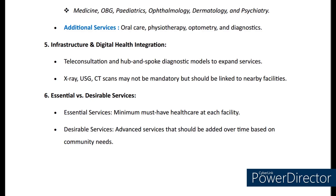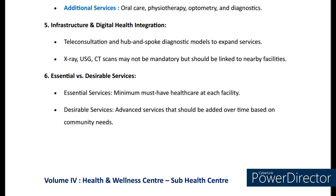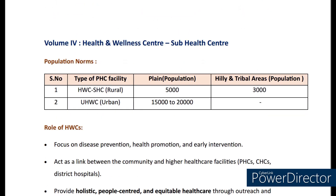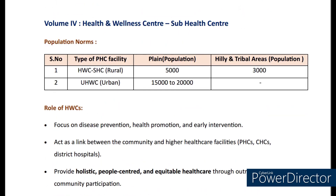Coming to essential and desirable services, essential services are the minimum must-have healthcare services at each facility, whereas desirable services are the advanced services that should be added over time based on community needs. Now coming to the last volume, that is Health and Wellness Centre Sub-Health Centre, or HWC, SHC. Under population norms, there are two types of facility: HWC SHC Rural and Urban HWC. For HWC Rural under Plain it's 5000 population, under Hilly and Tribal Areas it's 3000.